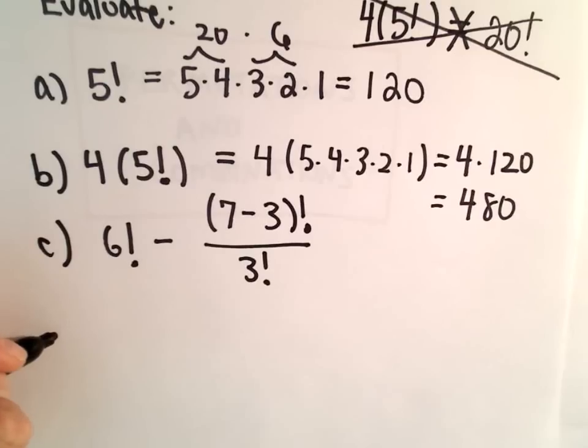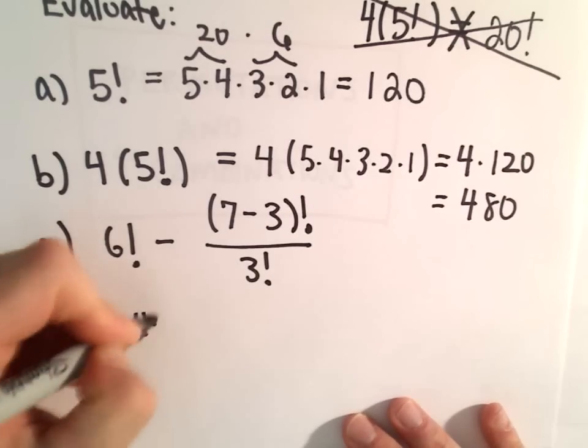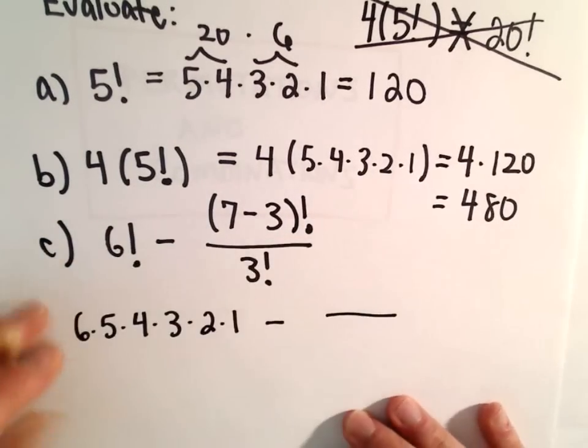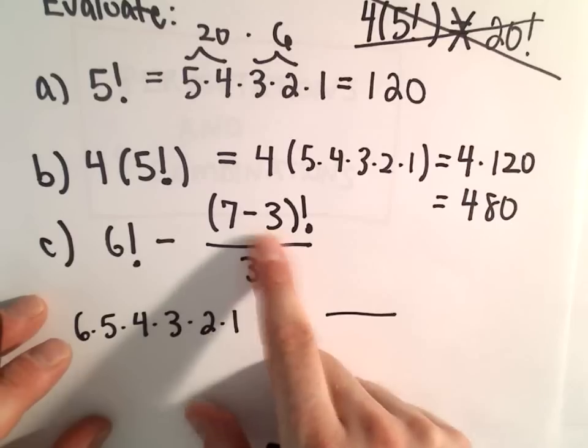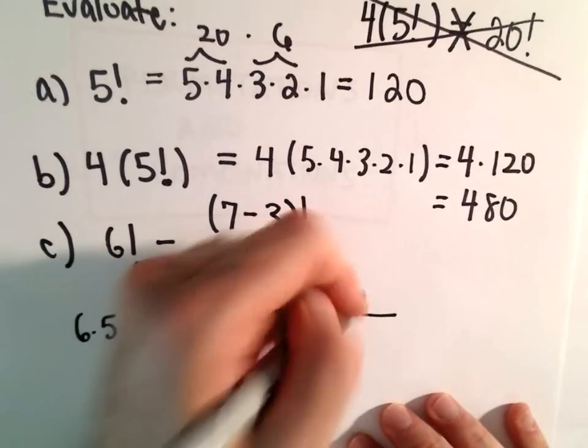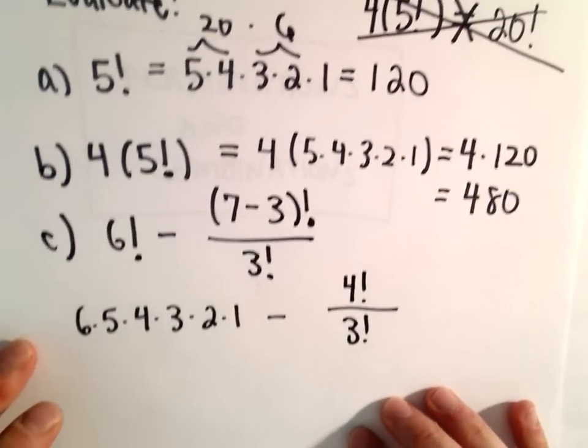Okay, so let's see. In part C, we've got 6 factorial. So, that's 6 times 5 times 4 times 3 times 2 times 1 minus. We've got 7 minus 3 factorial. So, I'm going to simplify. 7 minus 3 is 4 factorial over 3 factorial.